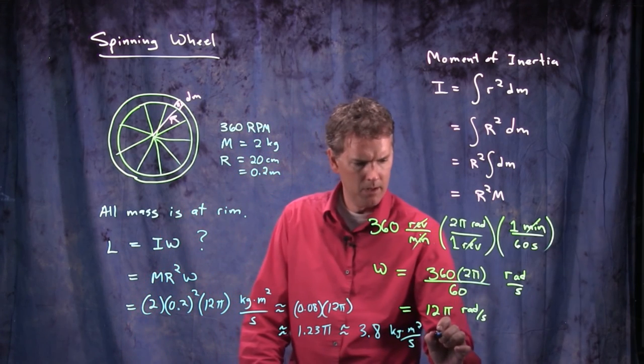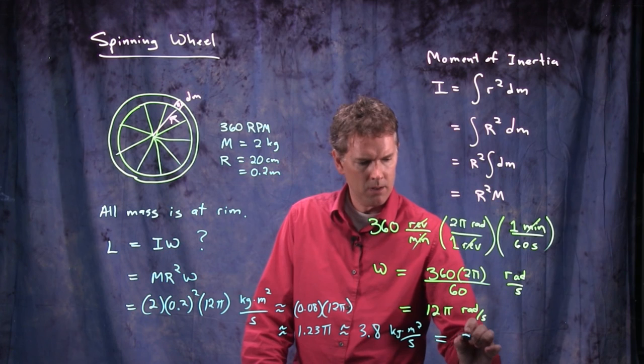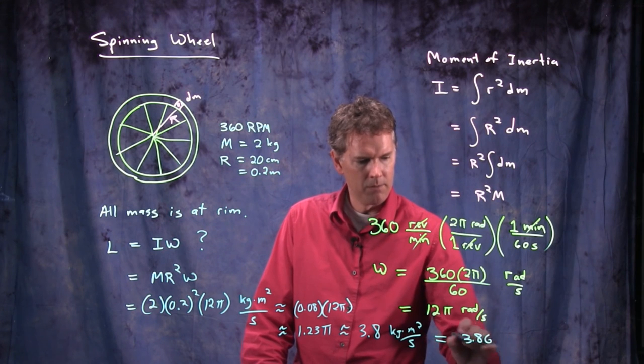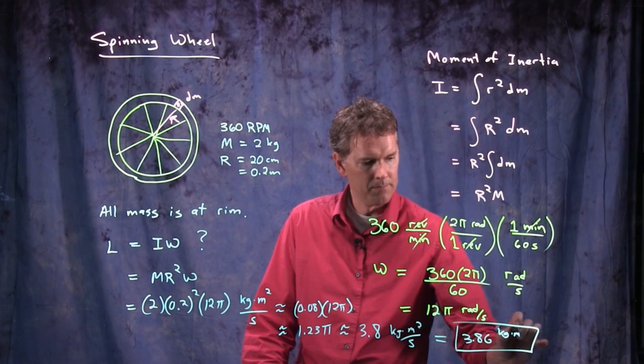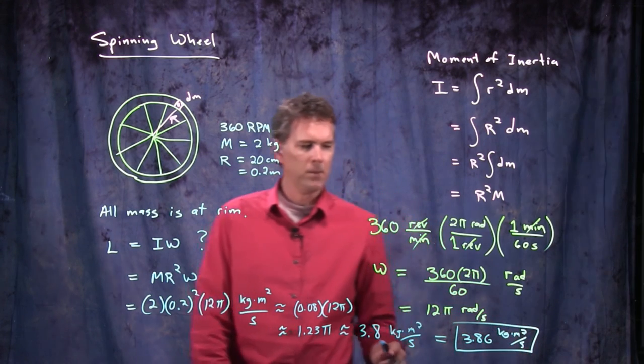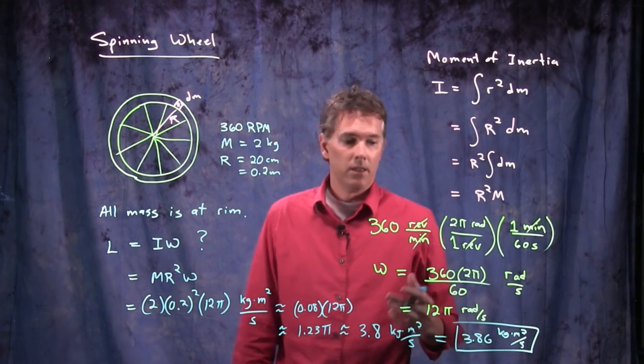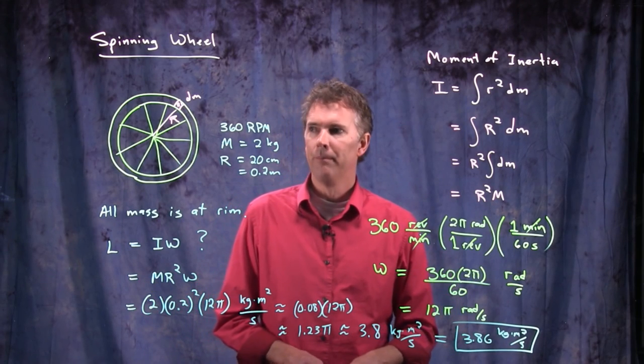Eric, did you get a real answer for that one? 3.86. All right. Good. So our guess was pretty close. Kilogram meter squared per second. This would be the angular momentum of the bicycle wheel.